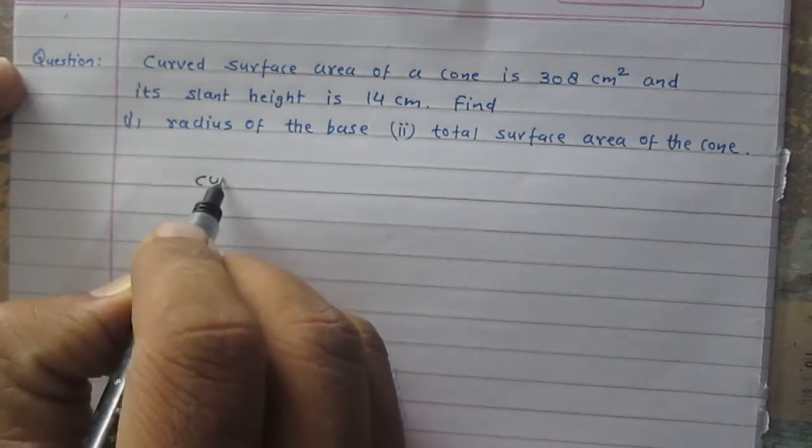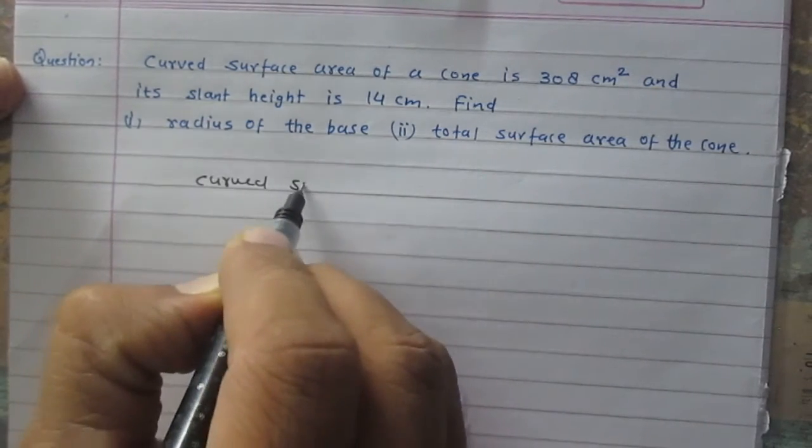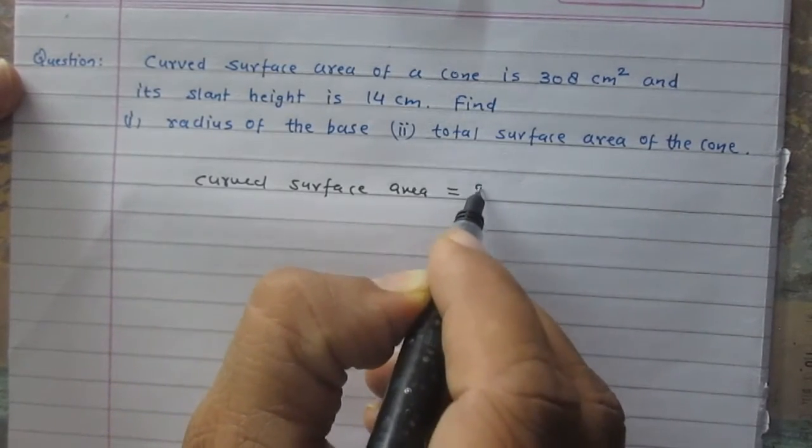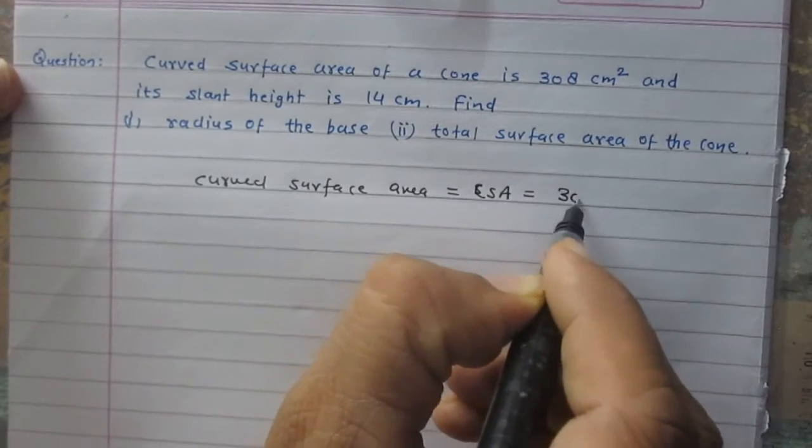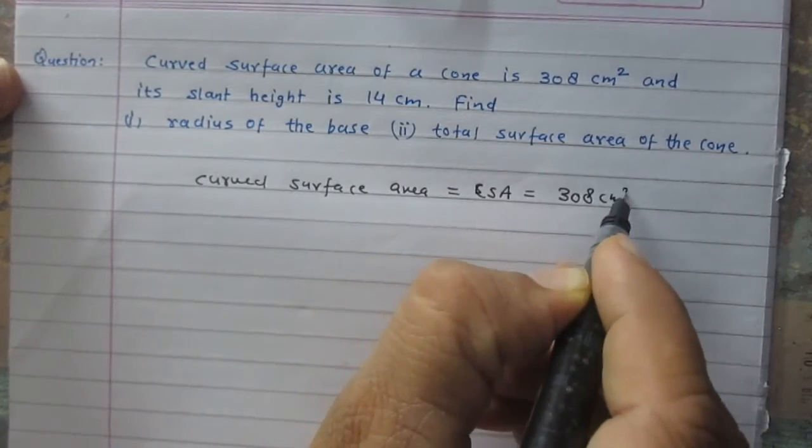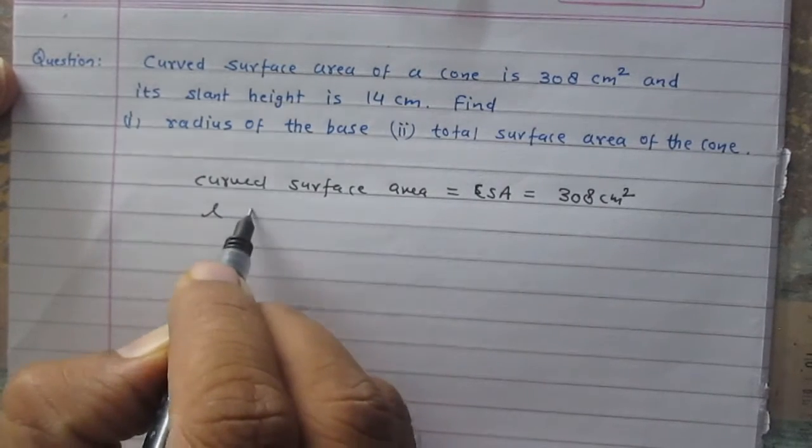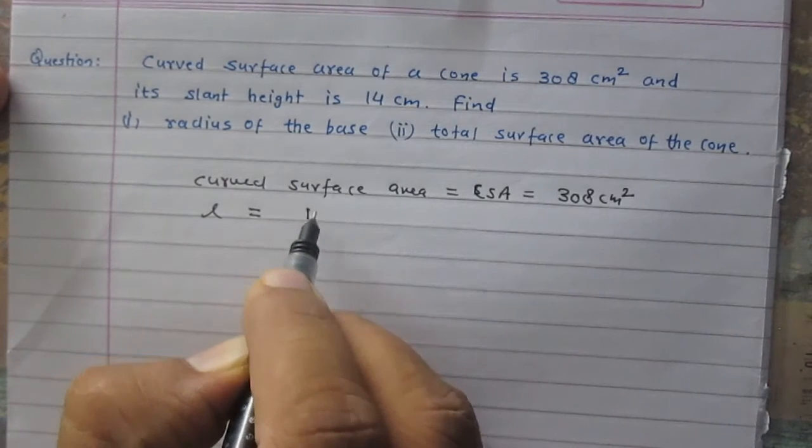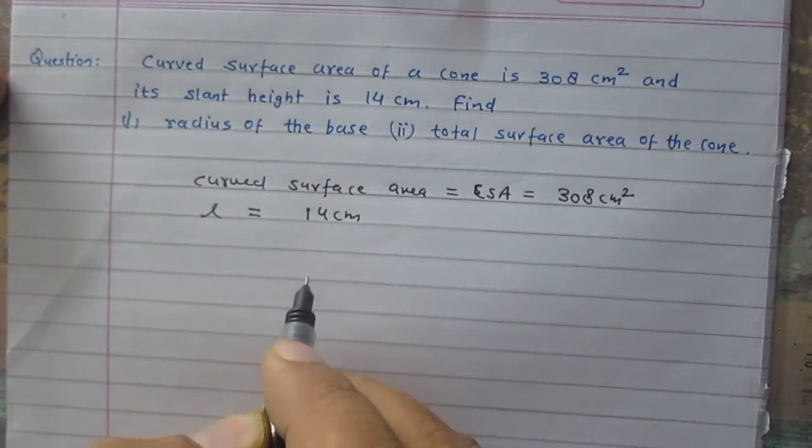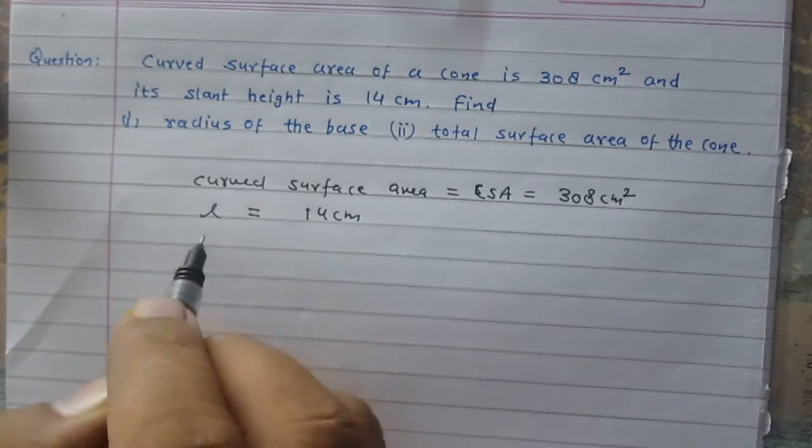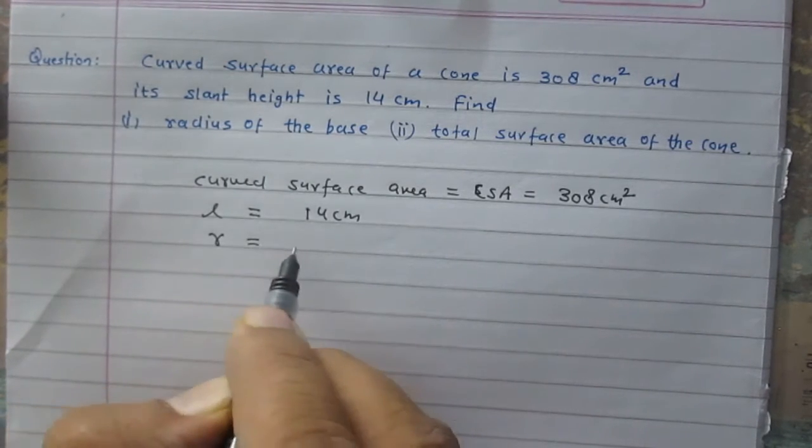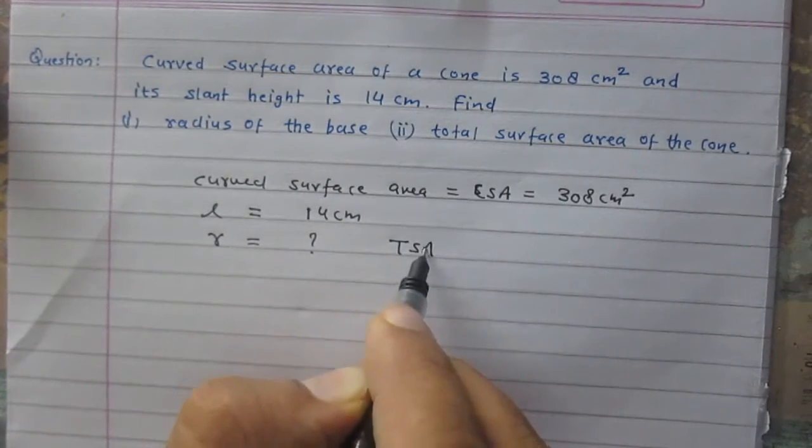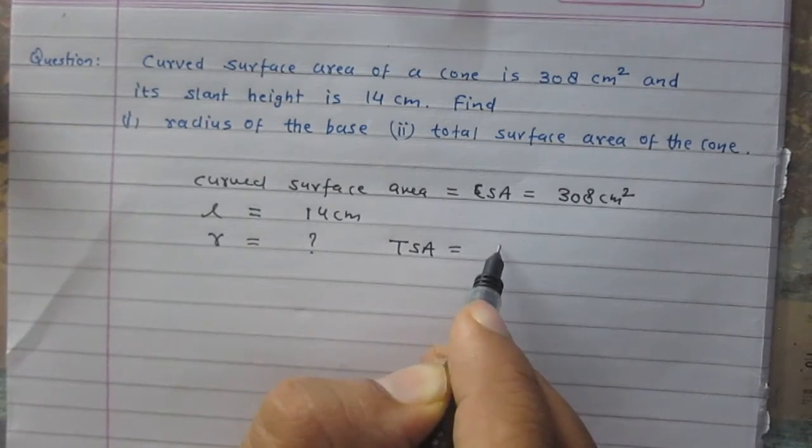We are given that curved surface area of the cone is 308 cm². Let us consider L stands for the slant height of this cone, it is 14 cm, and we are to find its radius. R stands for the radius which is unknown and TSA is for total surface area.